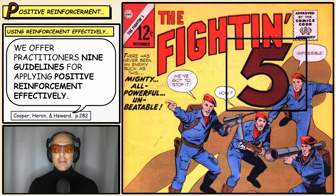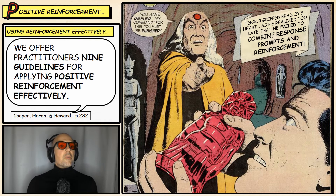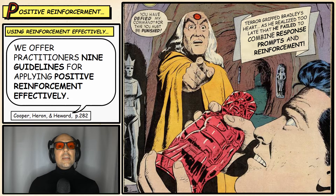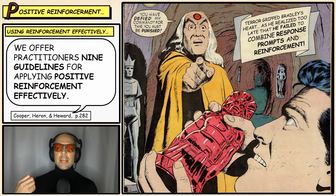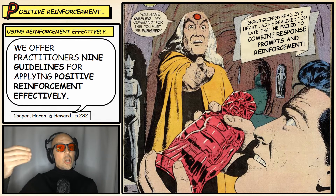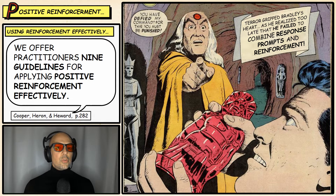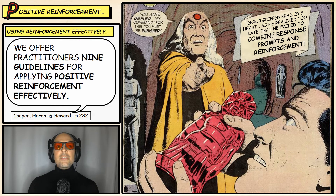Guideline number five: combine response prompts and reinforcement. Response prompts are the discriminative stimuli for reinforcement — what happens before a behavior that prompts the response. Eventually these take on stimulus control, triggering the behavior in the future. The three major types of response prompts are: instructions (telling someone what to do for reinforcement), modeling (showing them how), and physical guidance (moving their body to help achieve the behavior). These should be used in combination with reinforcement to establish stimulus control.